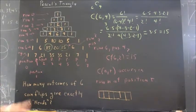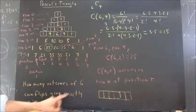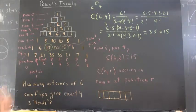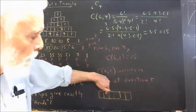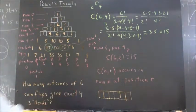Now, just as one quick application, let's ask: how many outcomes of six coin flips give us exactly three heads? Well, you can think of this as, how many ways are there to choose the three positions at which the three heads will occur?